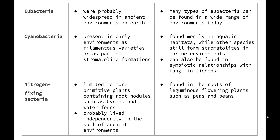Today, filamentous cyanobacteria are found mostly in aquatic habitats while other species still form stromatolites in marine environments. Some varieties of cyanobacteria can also be found in symbiotic relationships with fungi in lichen. Although nitrogen-fixing bacteria are found today in leguminous flowering plants such as peas and beans, these were not present during the early part of Earth's history.